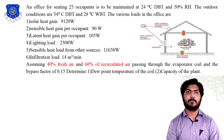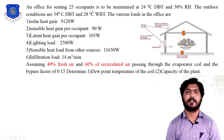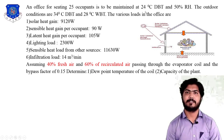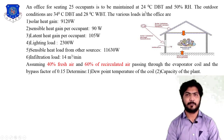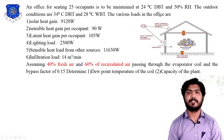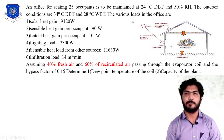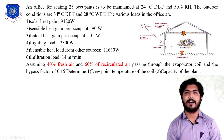First, in this numerical it is given that an office is for seating 25 occupants. The required or desired maintained temperature is 24 degree centigrade DBT and 50% relative humidity. The outside atmospheric condition is 28 degree centigrade dry bulb temperature.